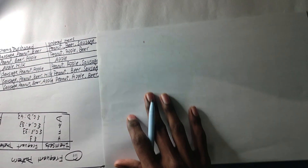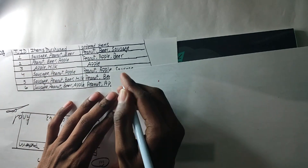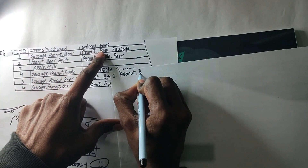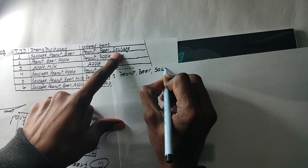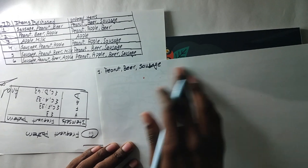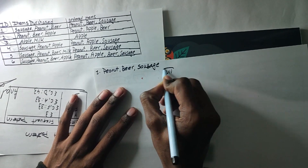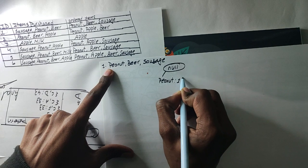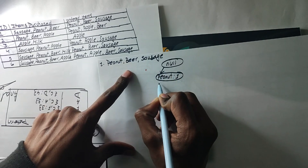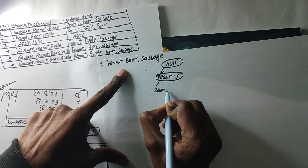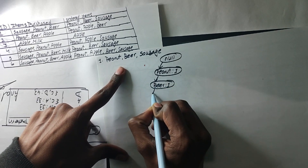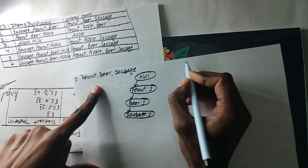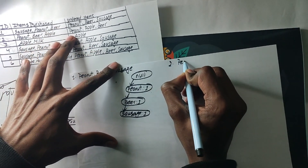So, we can tell you the first one. The first one is 1. The third one is 3. This diagram represents: the first is peanut, the second one is B, and the second one is sauces. The second one is P.